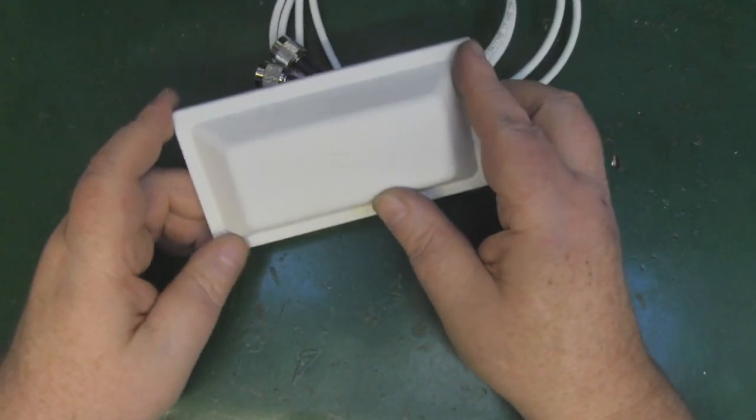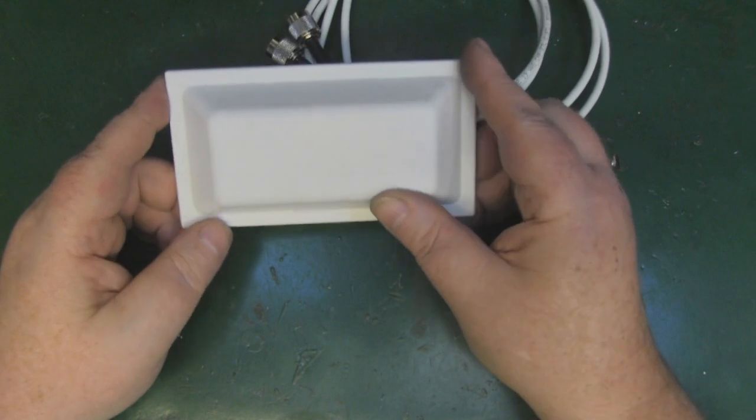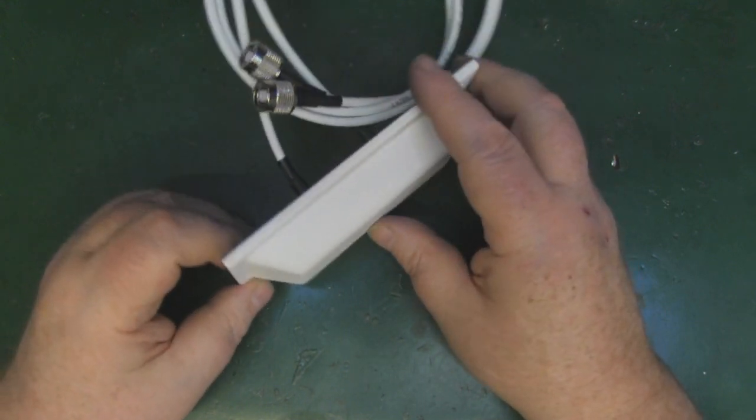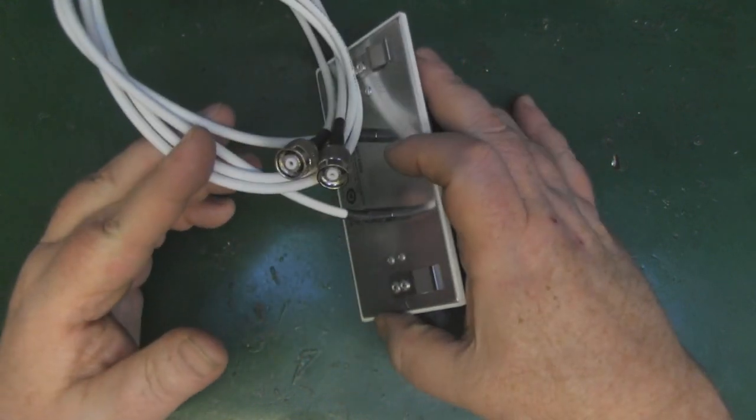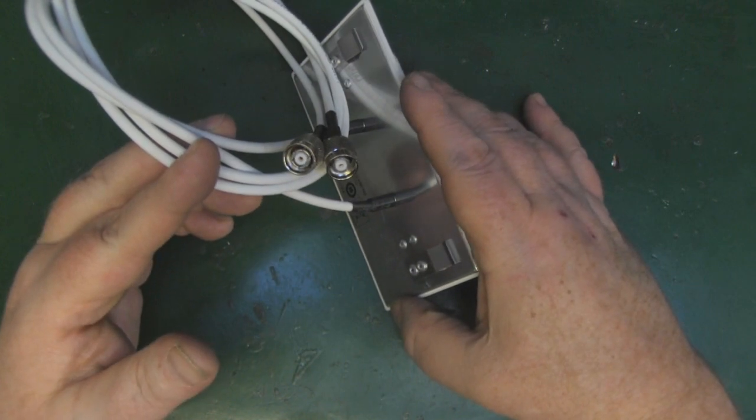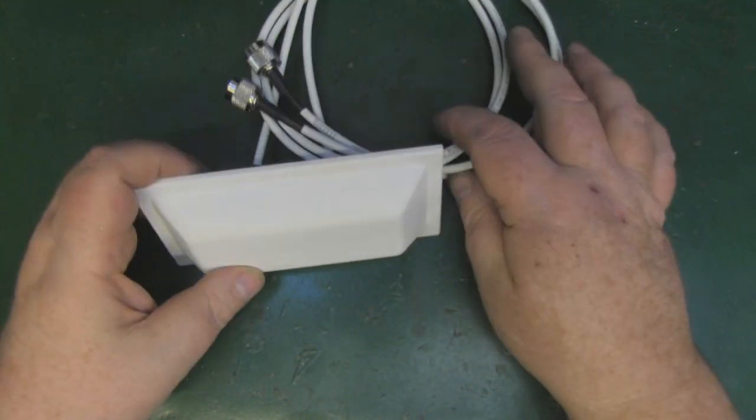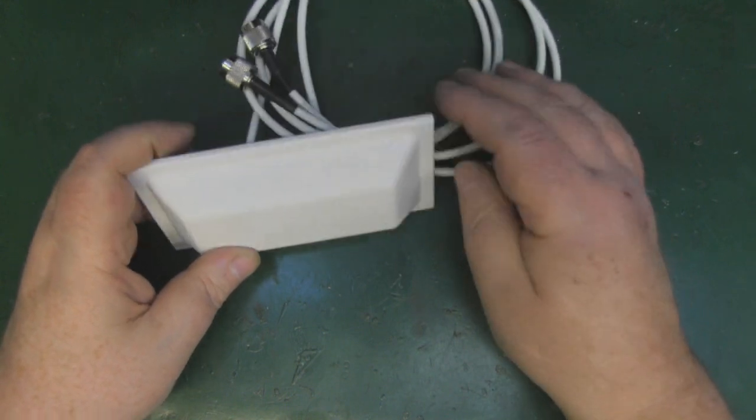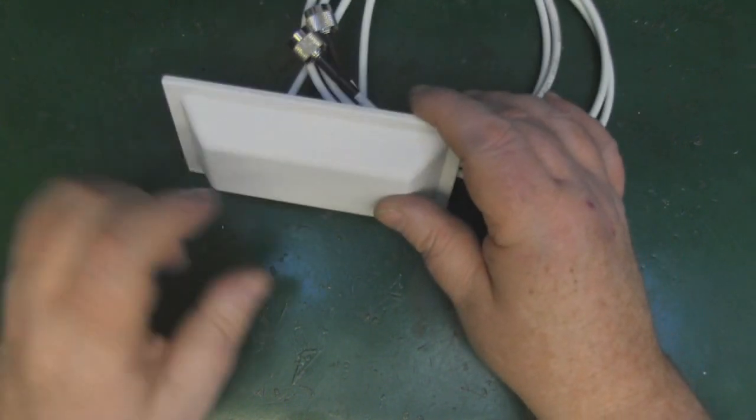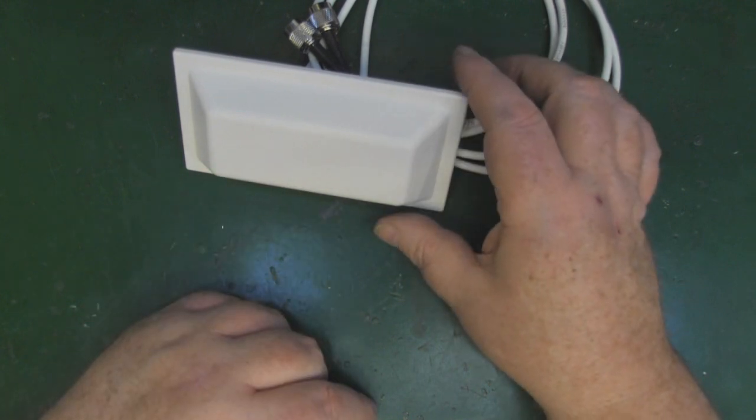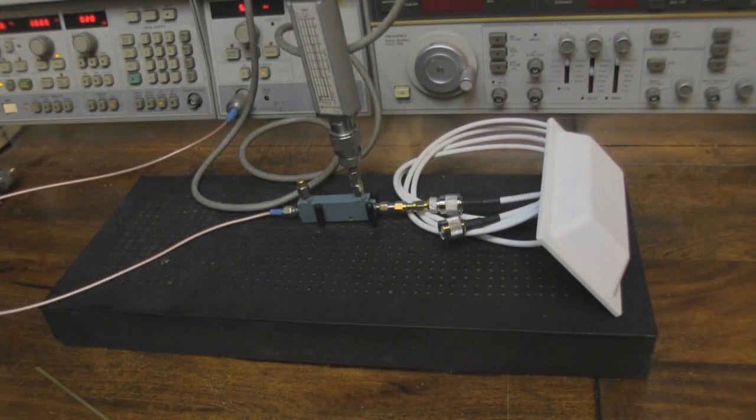We'll hook it up to the network analyzer first and see how responsive it is at 2.4 gigahertz. It's not the most powerful antenna in the world - it's only a 2dB antenna - but it's meant to go with one of their diversity setups, so there are two antennas in here.